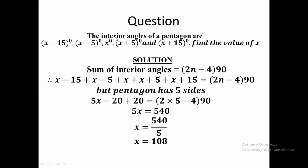Since all these angles are interior angles, if you add all five angles together, that means we are talking about the sum of interior angles of that polygon. The sum should be equal to the formula for finding the sum of interior angles of a polygon, which is (2n minus 4) multiplied by 90. So that means if you sum all these angles together, it should equal (2n minus 4) times 90.